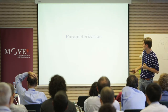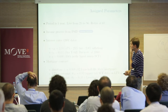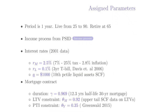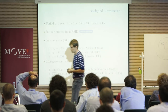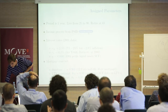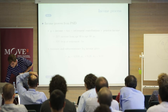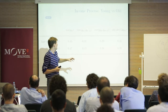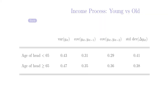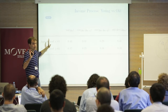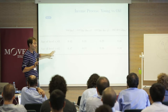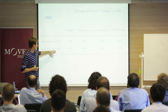Parameters: the model period is one year, households live from age 25 to 90, retiring at 65. The income process is based on PSID data. Looking at variance of income changes for households under and over 65 — the claim is that the standard deviation of income shocks is approximately the same across age groups, though there's a discussion about whether the 65-year cutoff is appropriate, since most mortgage-holders are in their 40s.